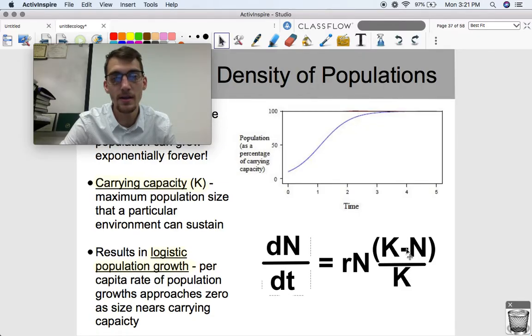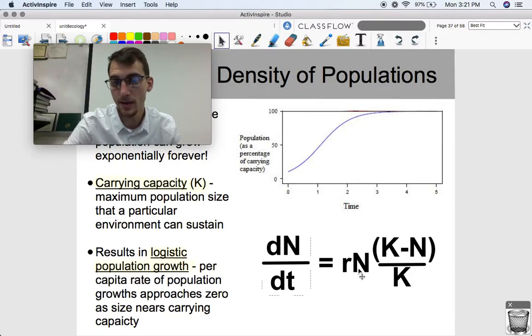So the difference between the population size and the carrying capacity, divided by carrying capacity, multiplied by per capita growth rate and population size.